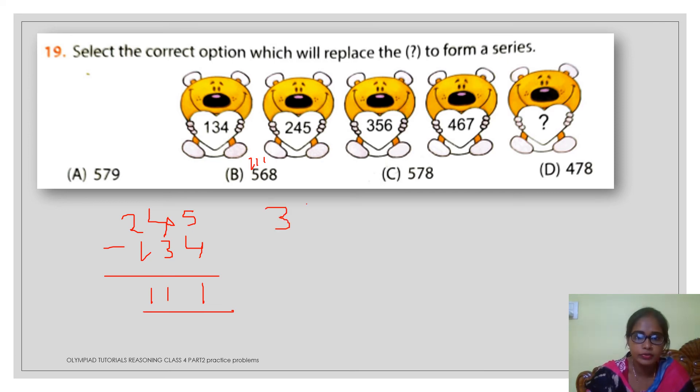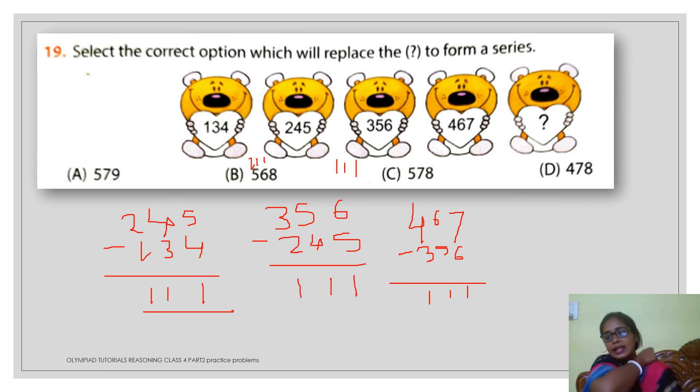Similarly, the next two numbers if you see 356 minus 245, you will again get the difference 1, 1 and 1. Here again you are going to have the difference 1, 1, 1. If you move on to the next number that is 467 minus 356, you will again get 1, 1, 1. So it is quite clear that the difference between the two numbers it is going to be 111. So here the number is missing. What you can do to find this missing number? Just you have to add 111 with this number 467. 467 plus 111 you will get the number 578. So option number C 578 this will be your correct answer.